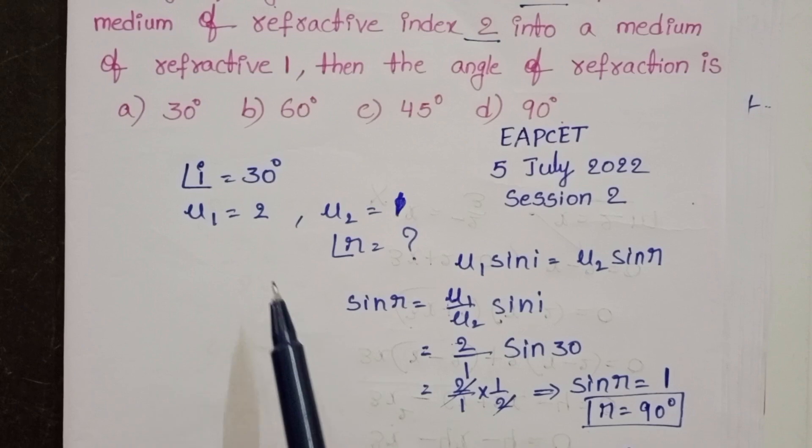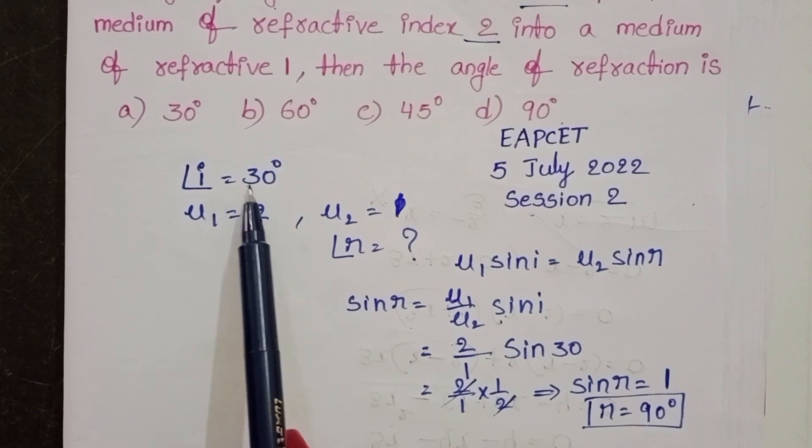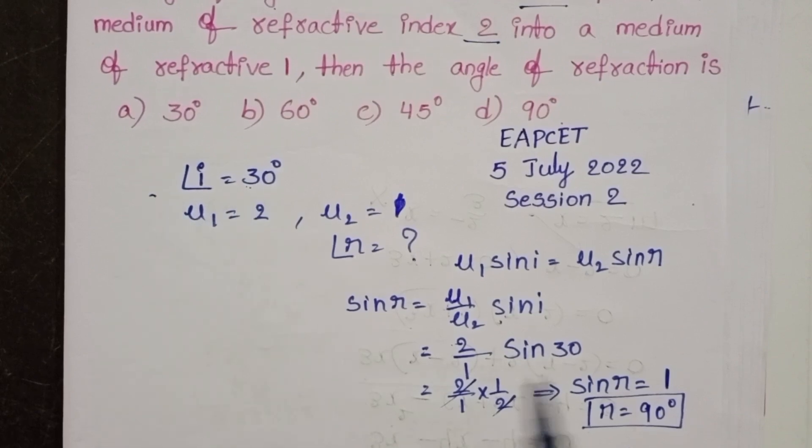So that means this angle equals the critical angle. The angle of refraction is 90 degrees.